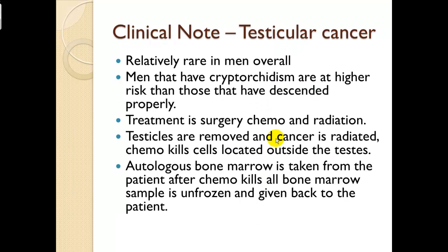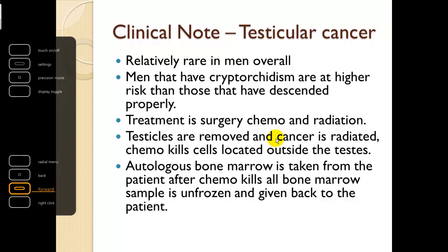Clinical note on testicular cancer. Relatively rare in men overall, but men with cryptorchidism or a testis remaining in the inguinal area are at higher risk than those who have descended properly. Treatment includes surgery, chemotherapy, and radiation. Testicles are removed and the cancer is irradiated; chemo kills cells located outside the testes. Autologous bone marrow transplant is used to help these patients — bone marrow is taken from the patient before or after chemo, the sample is frozen, and then given back to the patient so the bone marrow retakes and starts producing blood cells.